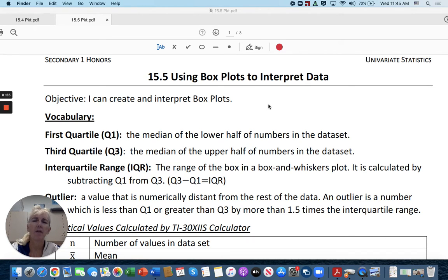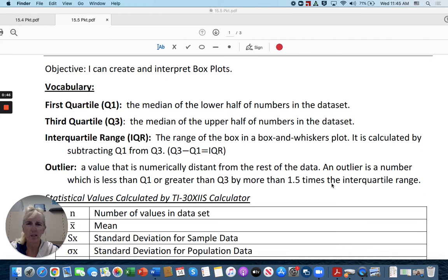Q1 is the median of the lower half of numbers in the data set. Quartile 3 is the median of the upper half of numbers in the data set. Interquartile range is basically Q3 minus Q1. And it's basically how wide the box is going to be on your box and whisker plot.